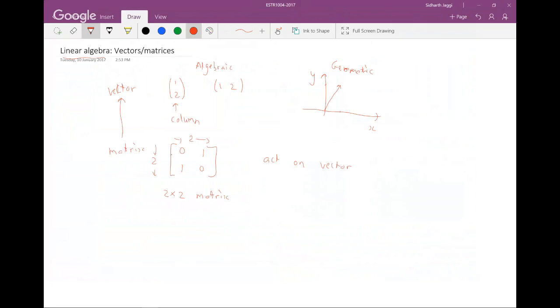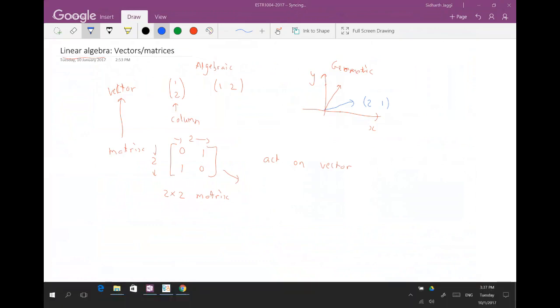So this matrix, 0, 1, 1, 0, would act on this vector or any vector, and it would flip the axes. It could make the x-axis the y-axis, and the y-axis the x-axis. It would make 1, 2 into the 2, 1 vector, and we will see this later. That's the algebraic and geometric meanings of matrices and vectors.